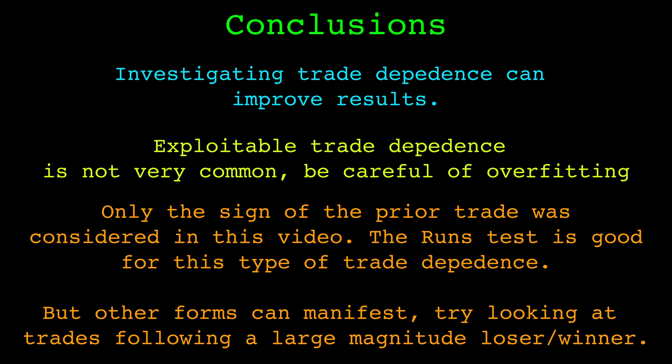I should also note that other forms of trade dependence are possible. For example, instead of looking if the prior trade was a winner or loser, you could look if the prior trade was a very large winner or loser. I've heard of autocorrelation being used for trade returns for this purpose, but personally I've never found it effective. I'd encourage you to research this idea for yourself though. Anyways, that's it for this one, thank you for watching.